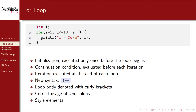Also note the style elements: the opening curly bracket is on the same line as the for statement, and the closing curly bracket is vertically aligned with the keyword for. The contents of the loop are all indented. Though there's only one line of code in this example, if there were multiple lines, they would all be indented consistently.